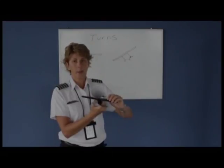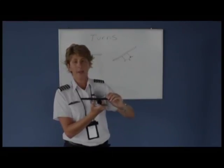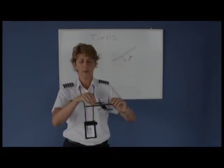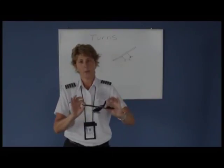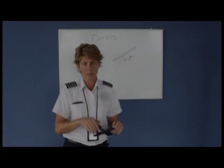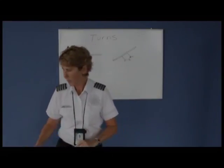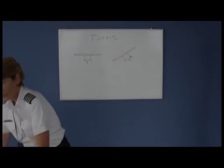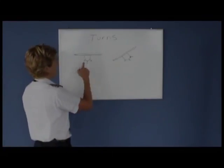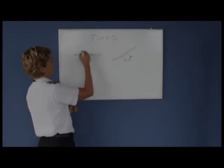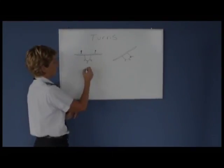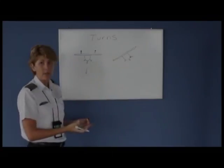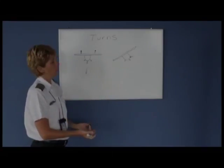We're going to talk in a minute about adverse yaw, created when the downward deflected aileron creates drag and pulls the nose in the opposite direction. But first, let's talk a little more about when the airplane turns. If we're flying straight and level, the vertical lift acts perpendicular to our wings, and the opposite force is the weight of the airplane where gravity pulls us downward.